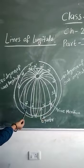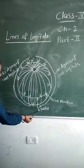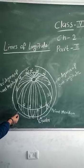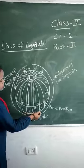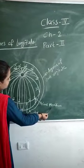This is the equator, and zero degree is the prime equator.